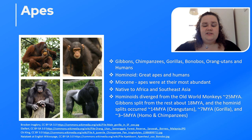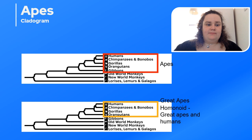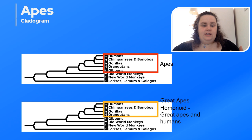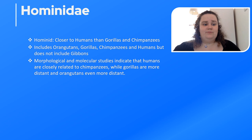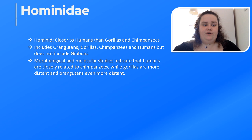Looking at the cladogram: apes include humans, chimpanzees, bonobos, gorillas, orangutans, and gibbons, whereas the great apes include humans, chimpanzees, bonobos, gorillas, and orangutans — excluding the gibbons. The hominoids include the great apes and humans. The Hominidae includes orangutans, gorillas, chimpanzees, and humans, but not gibbons. Morphology and molecular studies indicate that humans are more closely related to chimpanzees, while gorillas are more distant and orangutans even more so.